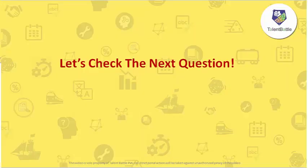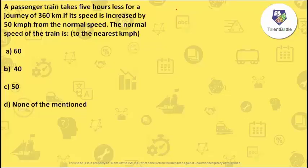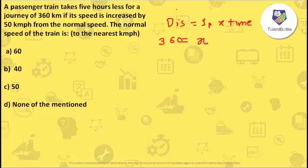Let's check the next question. A passenger train takes five hours less for a journey of 360 kilometers if its speed is increased by 50 kmph from the normal speed. They have asked for the normal speed of the train. Using distance equals speed into time, distance is 360 kilometers. I will consider the normal speed as x and the time taken at normal speed as t — this is the first equation.